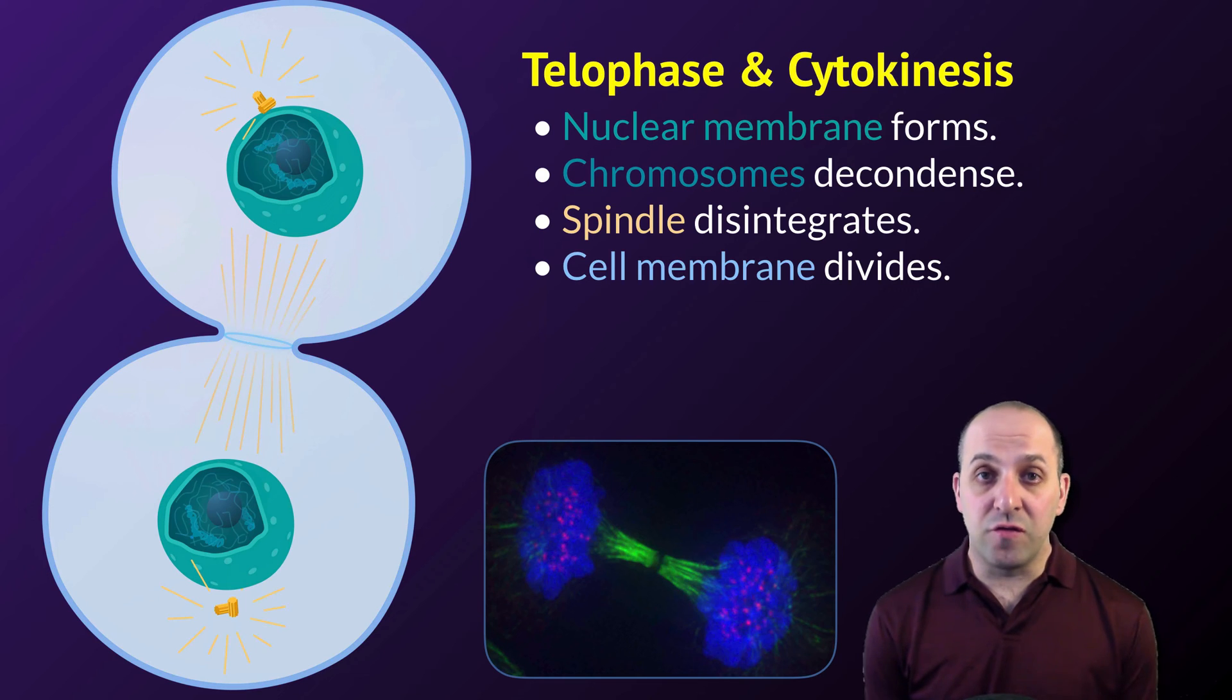That's the process of mitosis, taking us from the end of interphase with replicated chromosomes in the parent cell, through the production of two genetically identical daughter cells following the conclusion of cytokinesis.